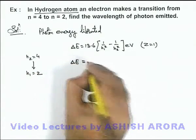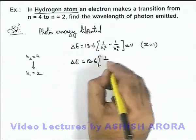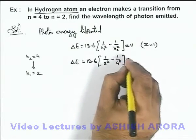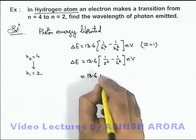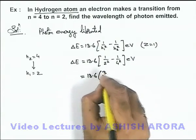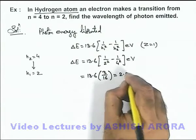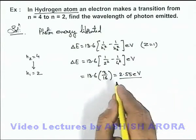Substituting the values, the energy of the liberated photon will be 13.6[1/2² - 1/4²] eV, which on simplifying gives 13.6 × (3/16) = 2.55 electron volts.